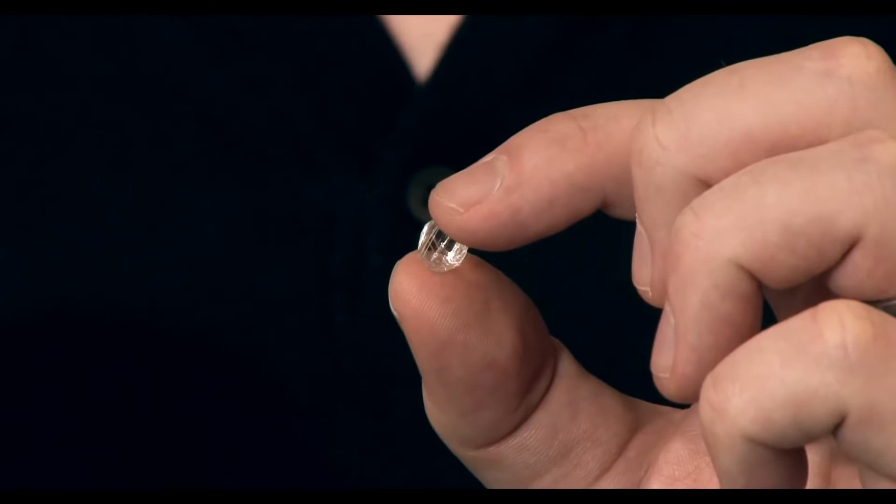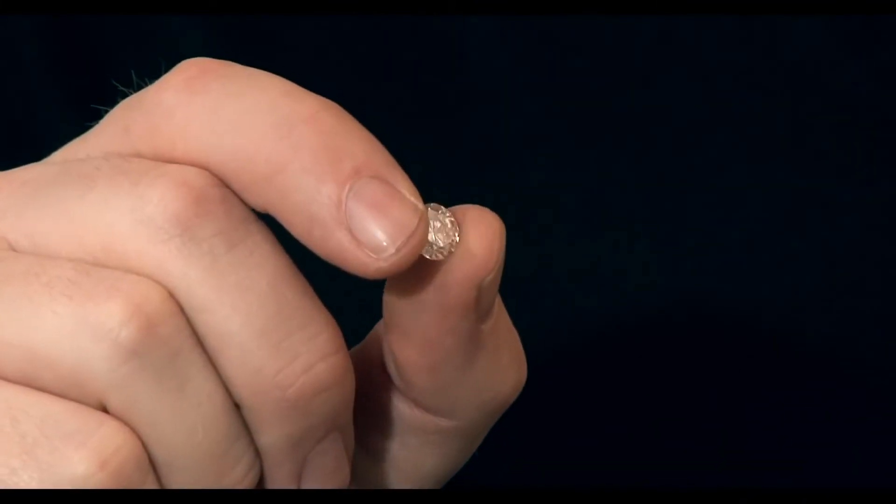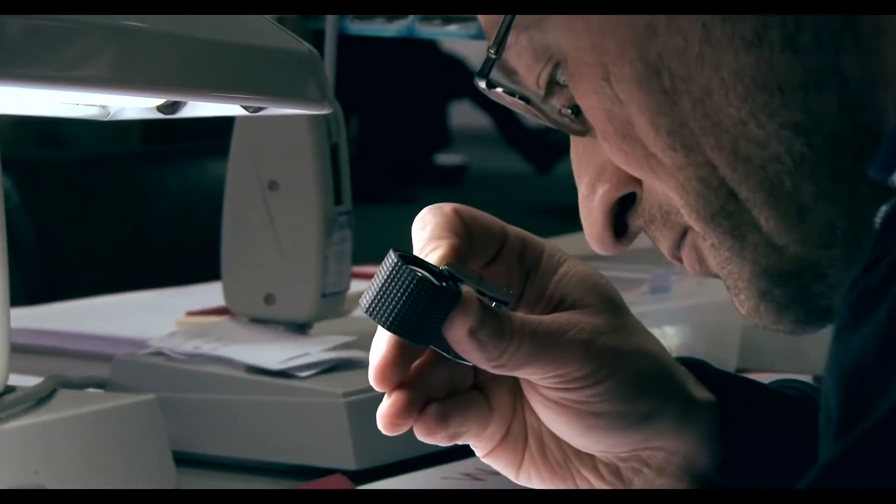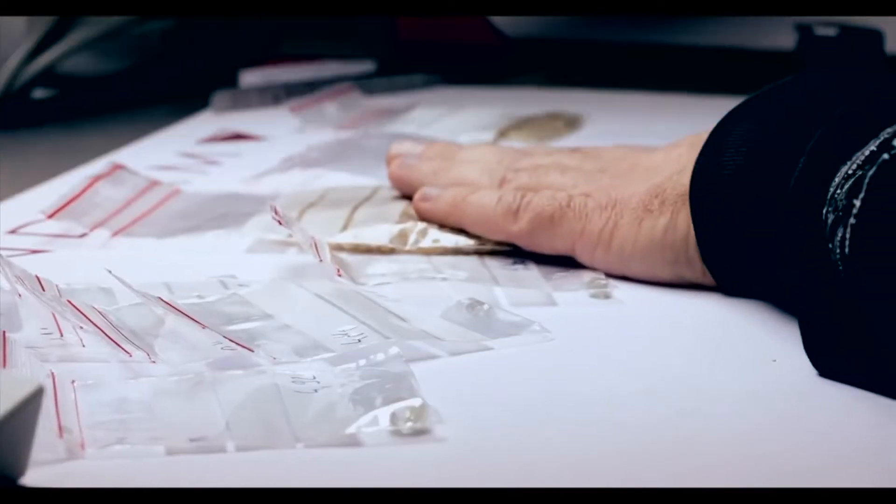Have you ever wondered how you go from a piece of rough to a perfectly polished diamond? We've come to Antwerp to have a look at the process in more detail. First of all, the diamonds need to be sorted into parcels.